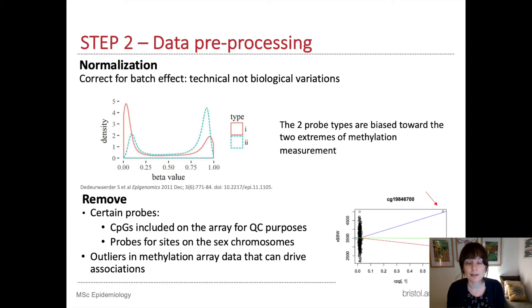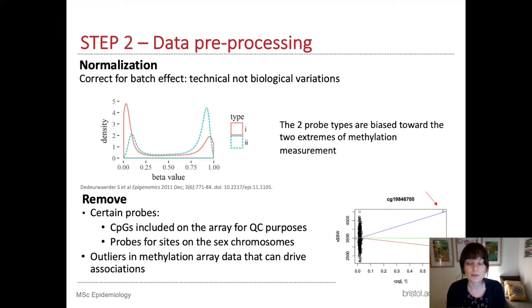We also want to try to correct the batch effects. Some of the probes are known as control probes, which means they shouldn't really show any variation across samples. Where we do see variation at those probes, we know it's probably due to a technical batch effect and not anything of biological interest. Therefore, we can use the methylation variation at those probes to attempt to correct the array data for any systematic batch effects. Then we can take those control probes out, because those aren't going to tell us anything interesting about the biology of our samples.